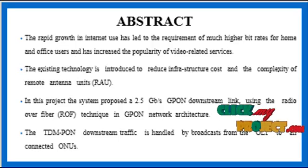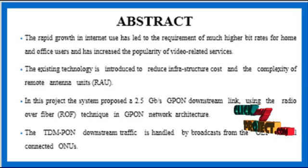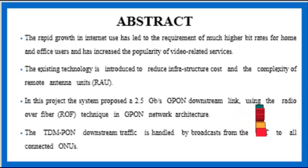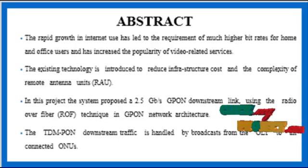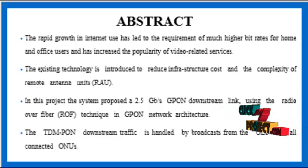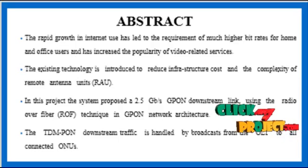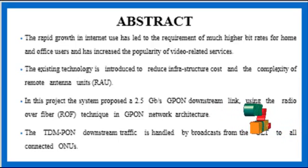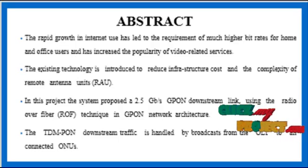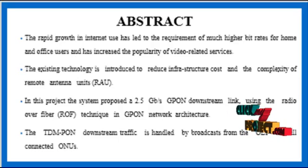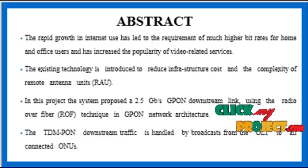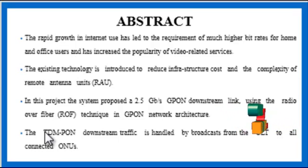The simulation model can support 32 and 64 bit users. The analysis was made based on the performance of the eye diagram. The Hybrid WDM-TDM-GPON consists of 32 ONUs with separate WDM groups sharing 8 wavelengths in WDM mode. Within each group, 4 ONUs share 1 wavelength in TDM mode. The TDM-PON downstream traffic is handled by broadcast from the OLT to all connected ONUs.